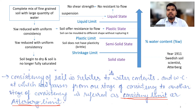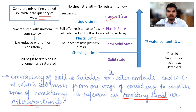Let us understand these stages and limits using plots. Suppose we have a complete mix of fine-grained soil with a large quantity of water — the soil is in a liquid state. In this case, the soil has no resistance to flow and has very negligible shear strength. When there is further reduction in water content with uniform consistency, the soil offers resistance to flow and is in the plastic state.